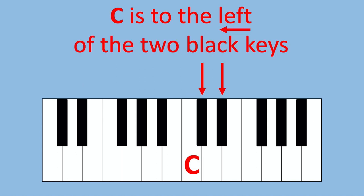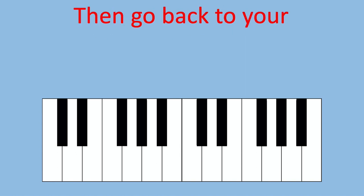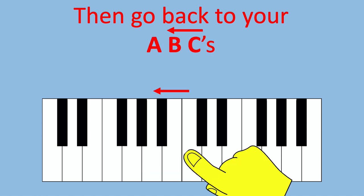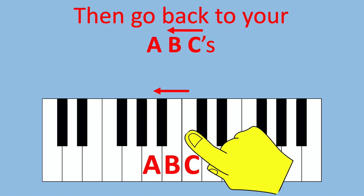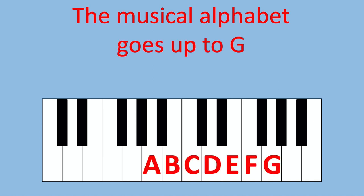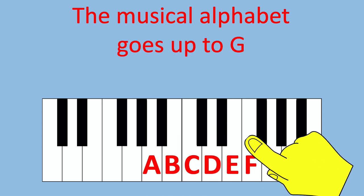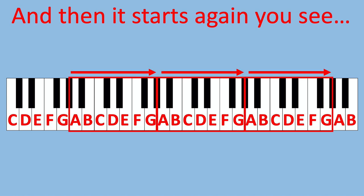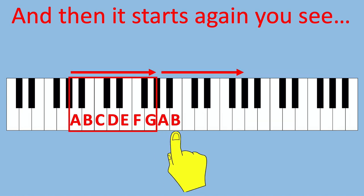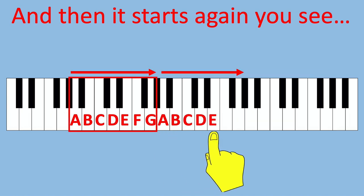C's to the left of the two black keys. Then go back to your ABC's. The musical alphabet goes up to G, and then it starts again you see. A B C D E F G.